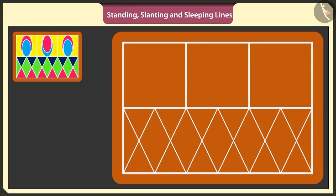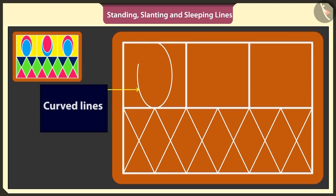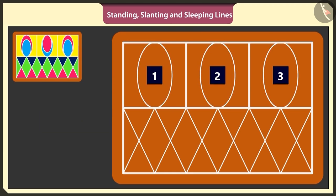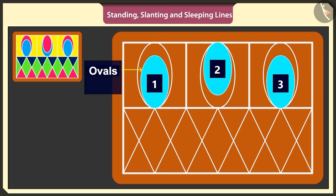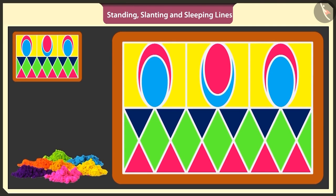This has become a beautiful rangoli. To make it even more beautiful, in these empty squares, I will make three ovals using curved lines. I will make three smaller ovals inside these three ovals. Yes, this is how we fill colors in a rangoli. This is looking very beautiful.